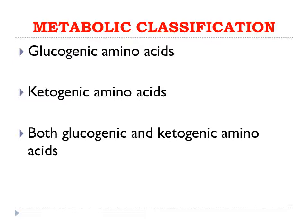On the basis of their metabolism, amino acids are classified as glucogenic, ketogenic, or both glucogenic and ketogenic. Glucogenic amino acids are those that can form glucose after being broken down. Ketogenic amino acids are those able to form ketone bodies after being broken down. Amino acids that can yield both glucose and ketone bodies are classified as both glucogenic and ketogenic.